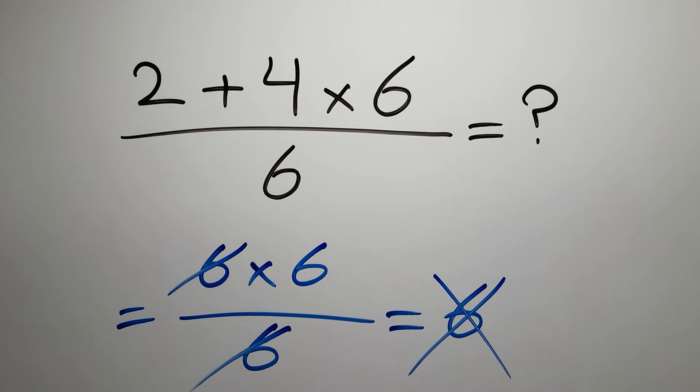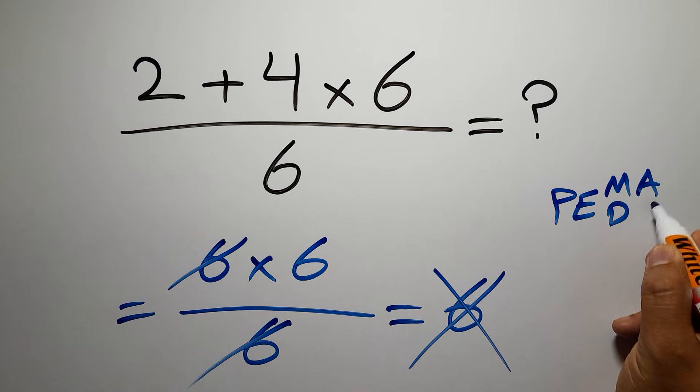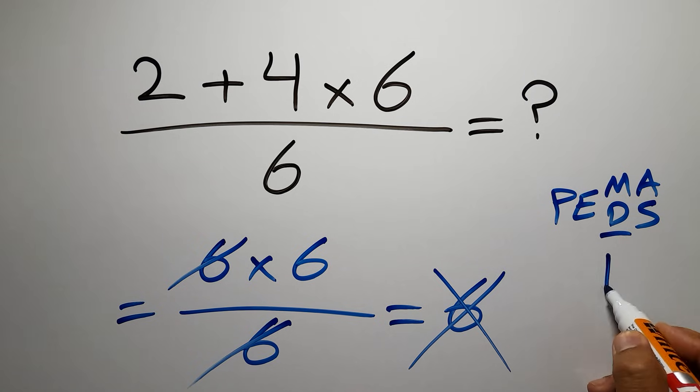First we have to do parentheses, then exponents, then multiplication or division, and finally addition or subtraction. Remember that multiplication and division have equal priority and we have to go from left to right, and the same applies to addition and subtraction.